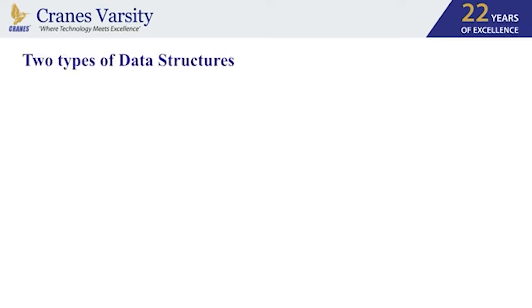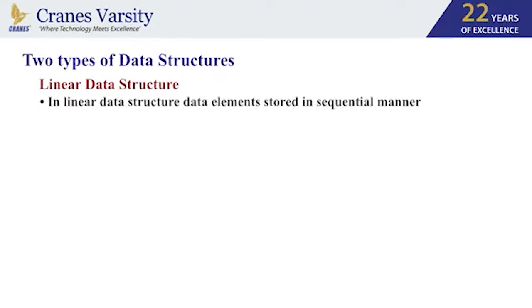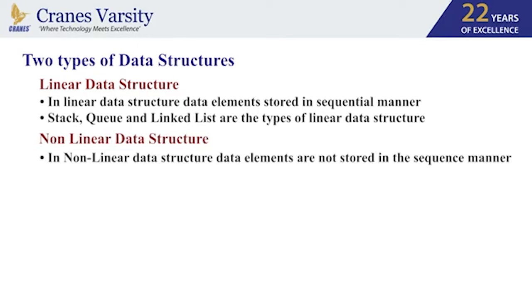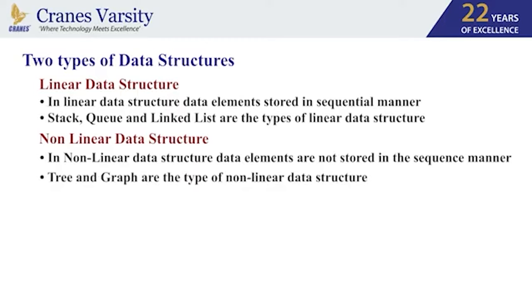When you look into the types of data structures, there are basically two types. The very first one is the linear data structure, where data elements are stored in a sequential manner — for example, stack, queue, and linked list are types of linear data structures. The second type is the non-linear data structure, where data elements are not stored in a sequential manner — for example, trees and graphs are basic examples of non-linear data structures.